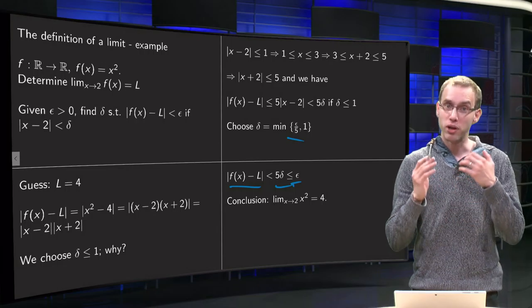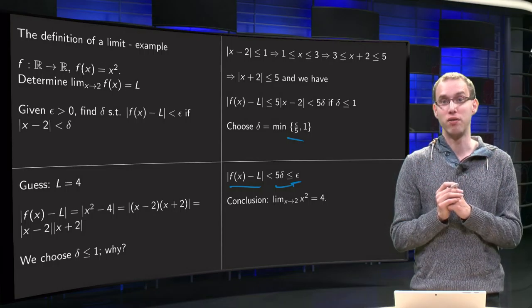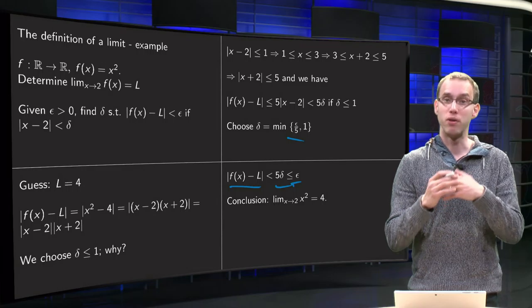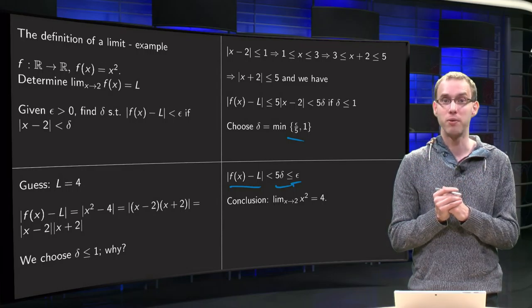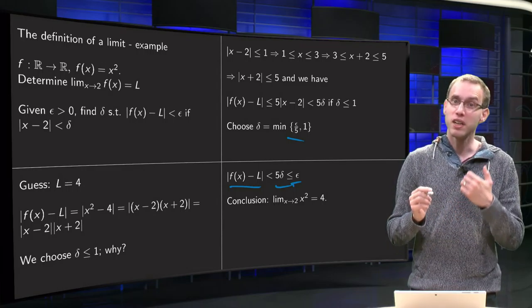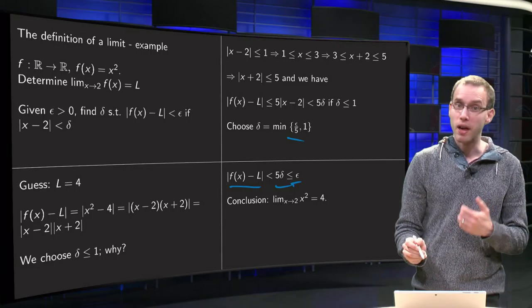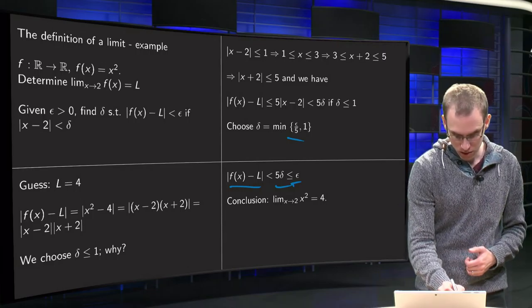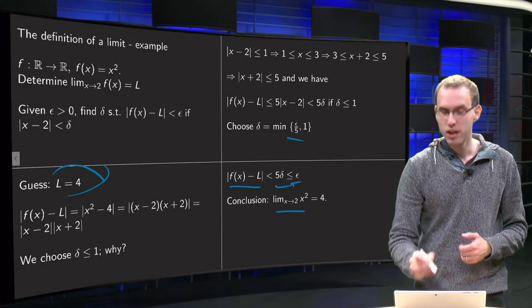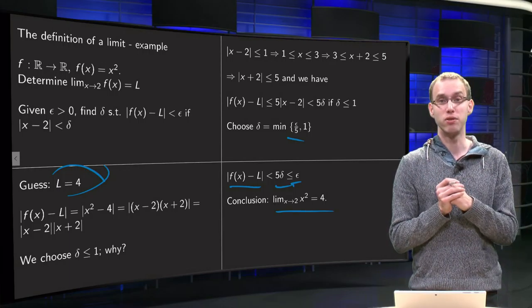So if we choose our delta like this, then |f(x) minus L| will be smaller than epsilon for an arbitrary epsilon, which means that our limit equals L, which we took as L equals 4. So the limit as x approaches 2 of x squared equals 4.